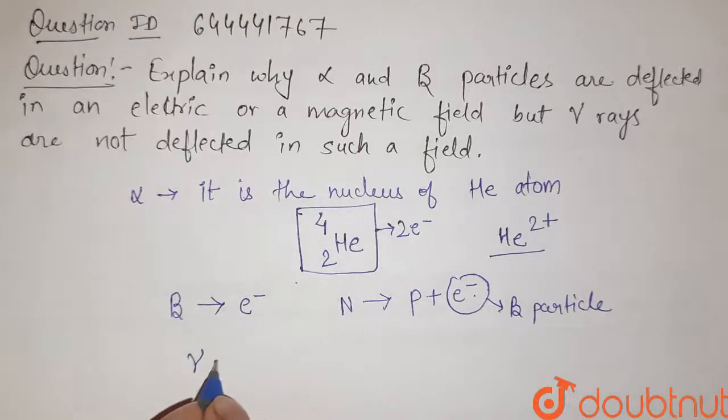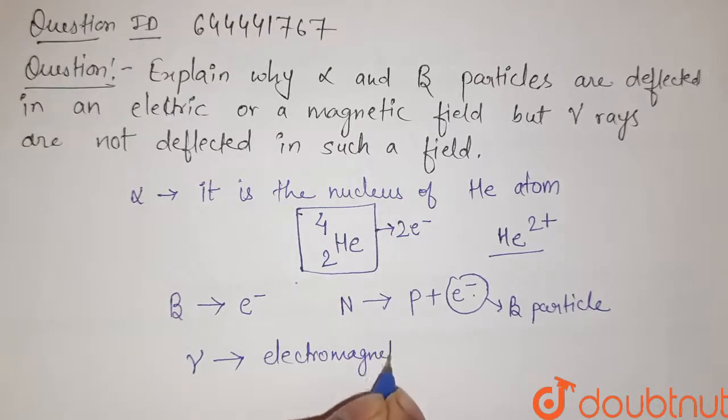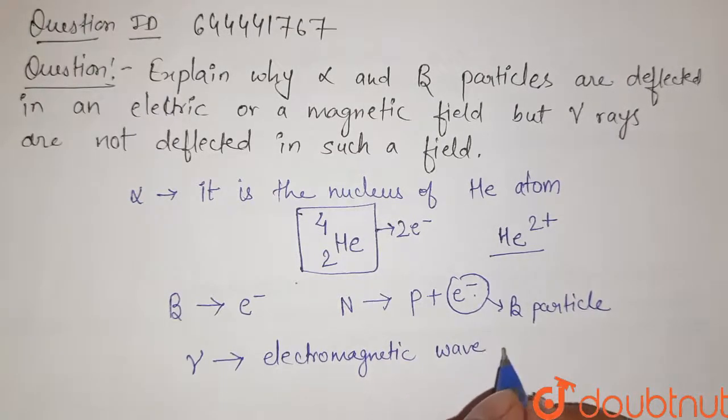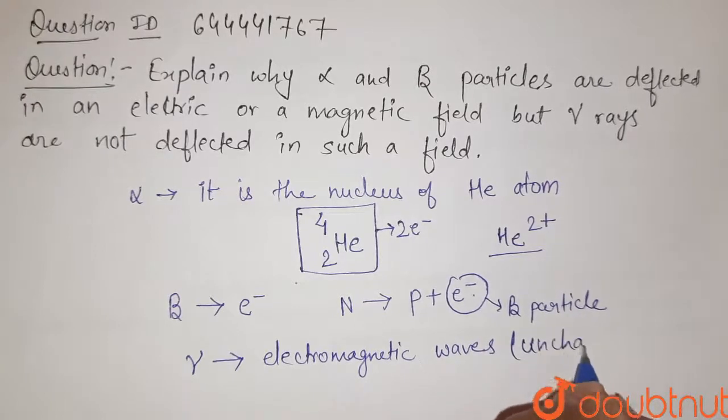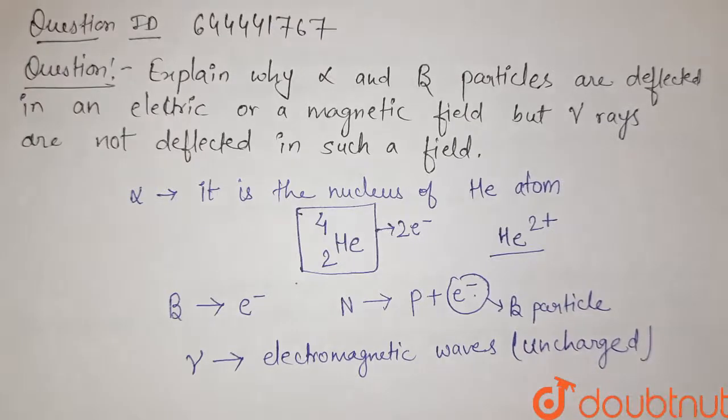Now gamma rays. Gamma rays are electromagnetic waves. That is why they are uncharged radiations.